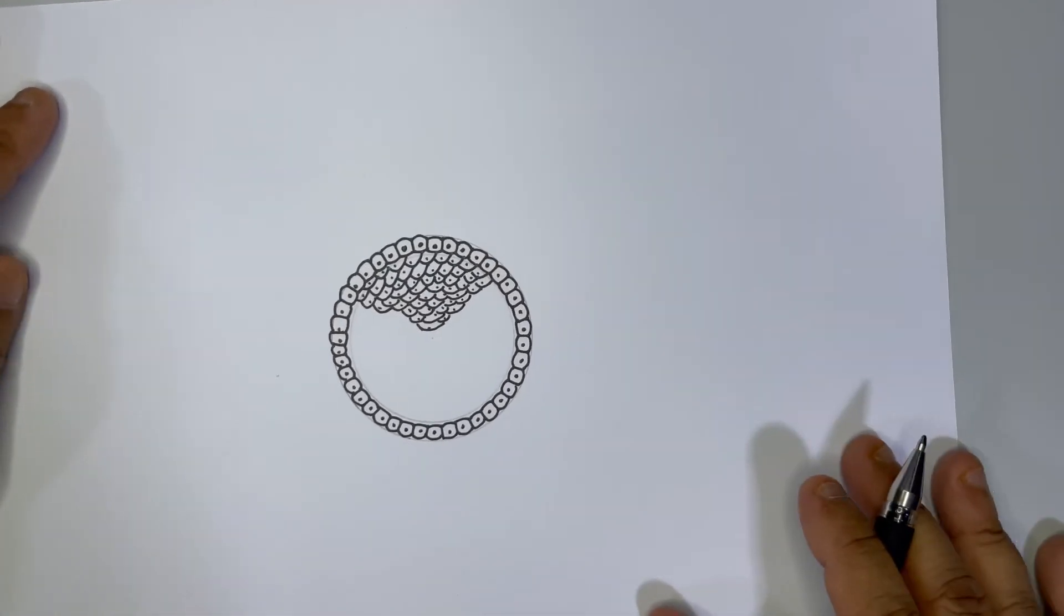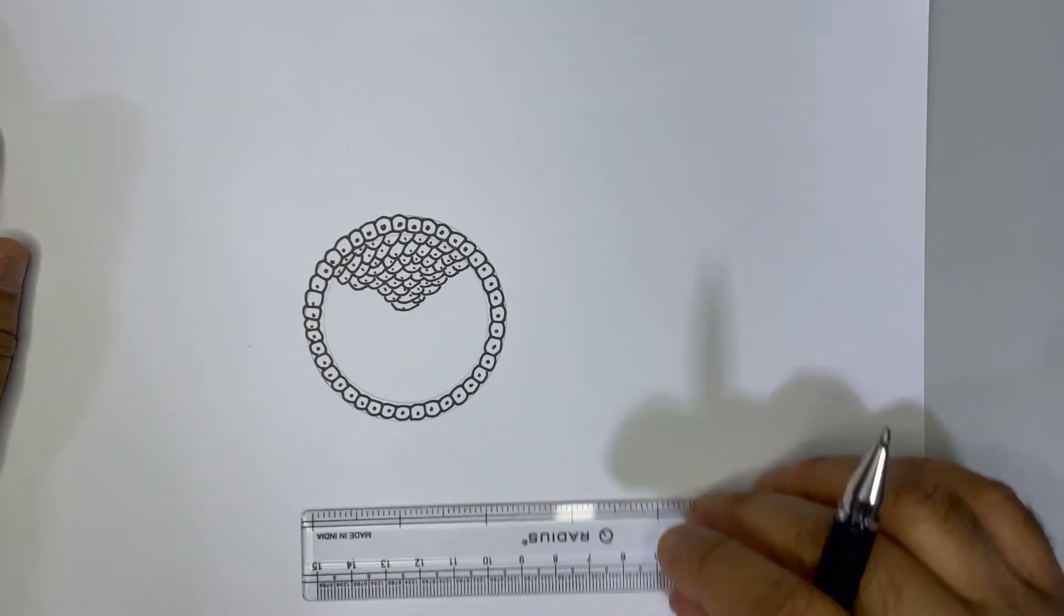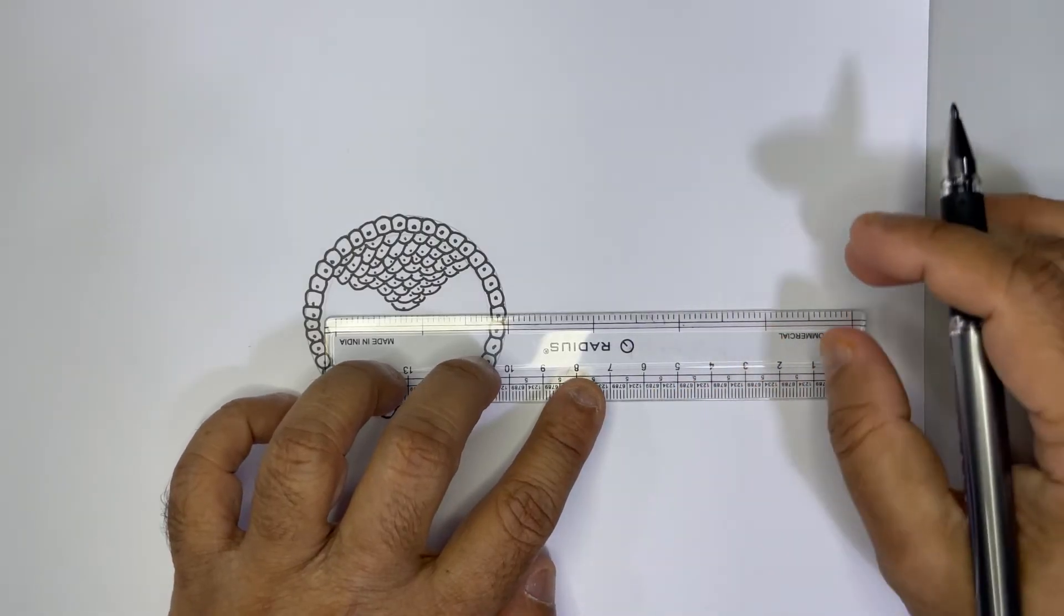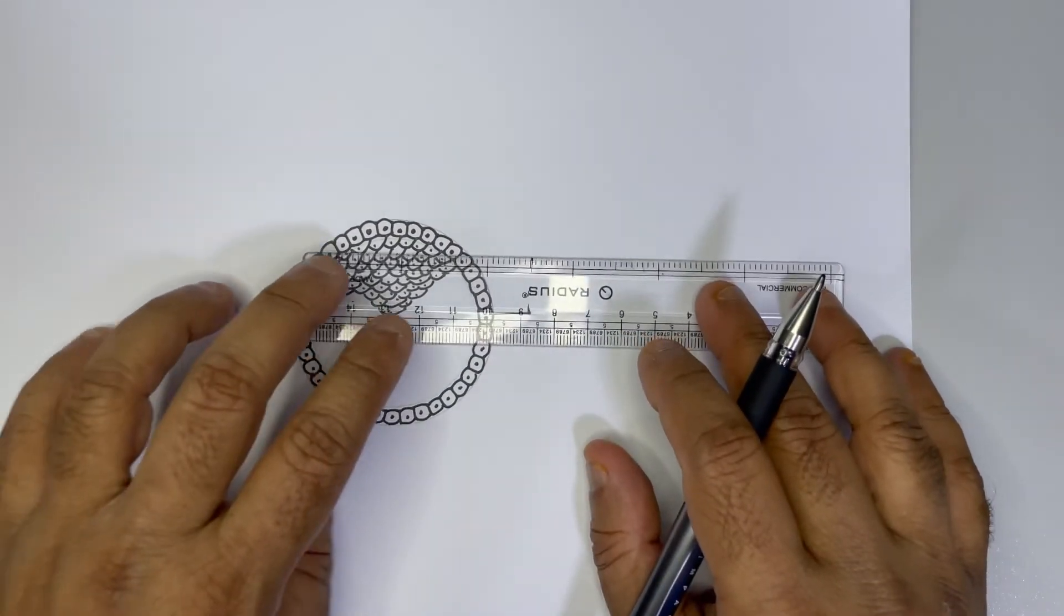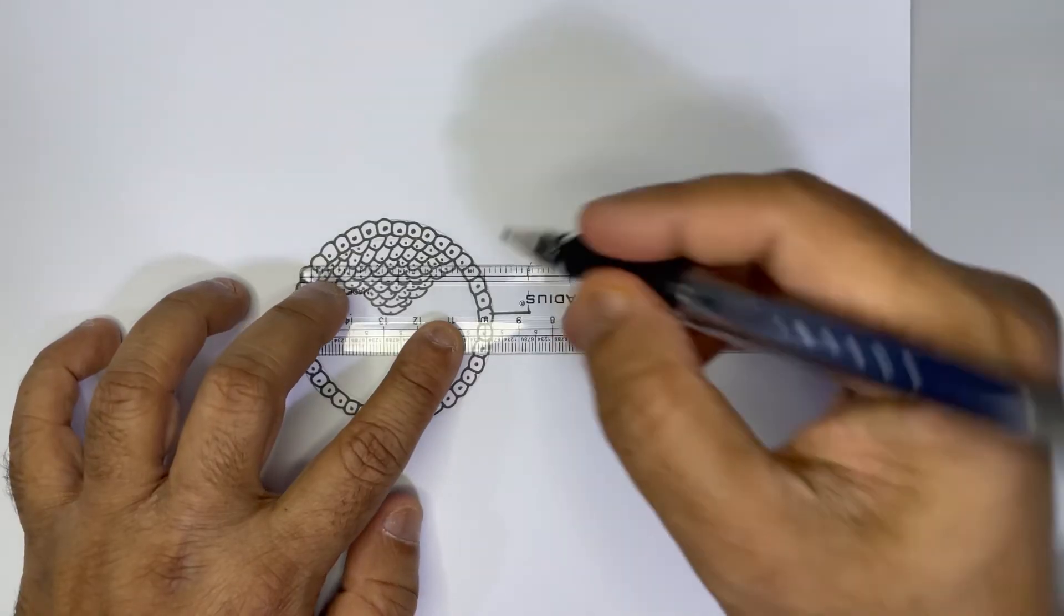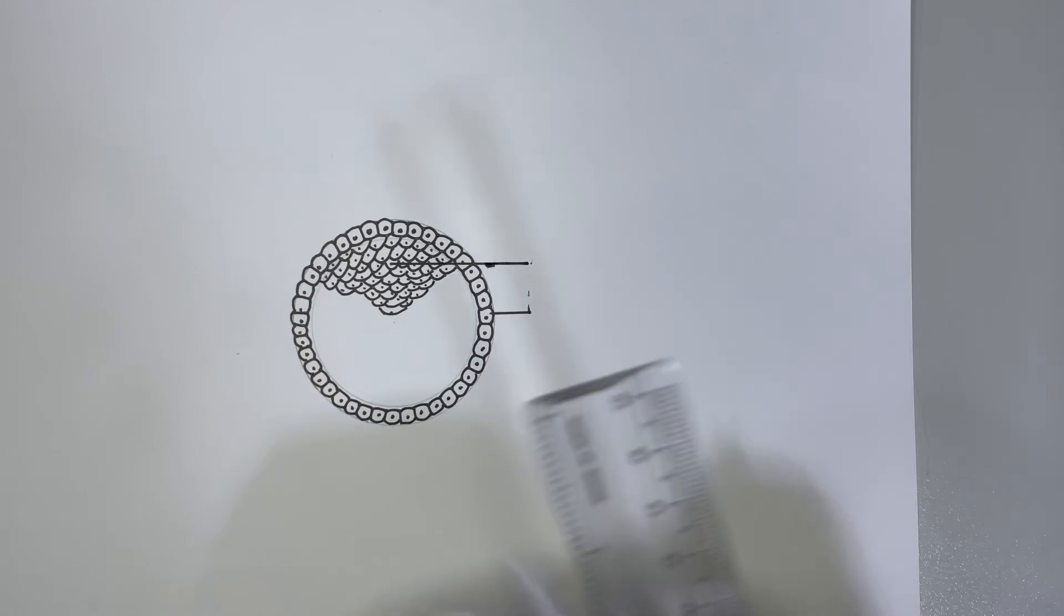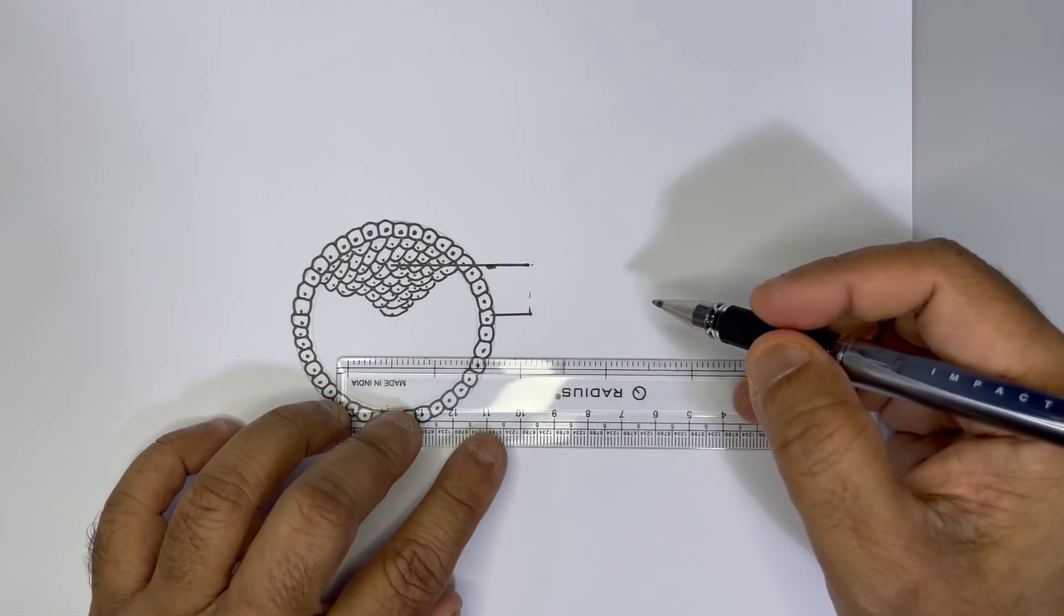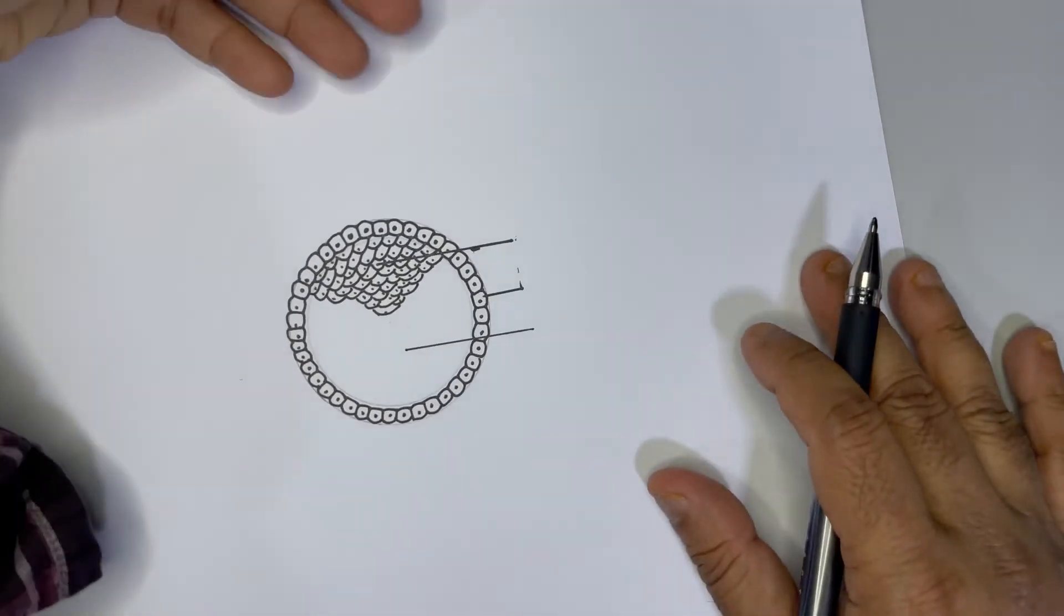And now it is the time for labeling, so let's go ahead and label the parts. This is the outer mass layer, this is the trophoblast cells, so we label it as trophoblast. This hanging cells are called inner cell mass, and the cavity inside is called blastocoel. All right, so once it is done, let us label guys.